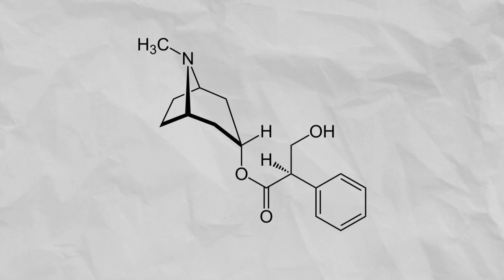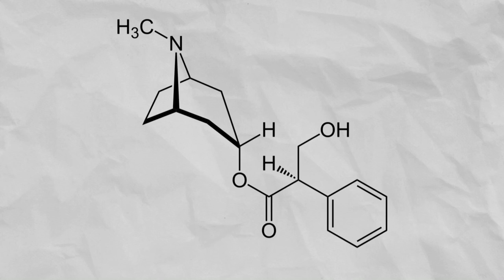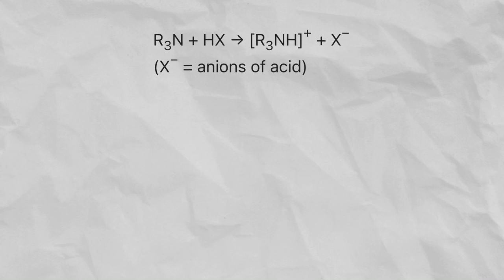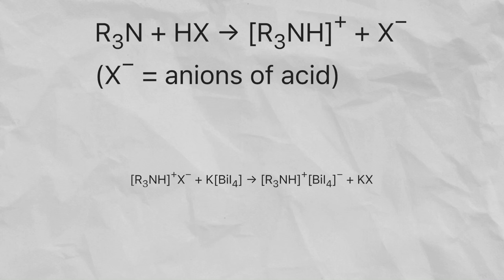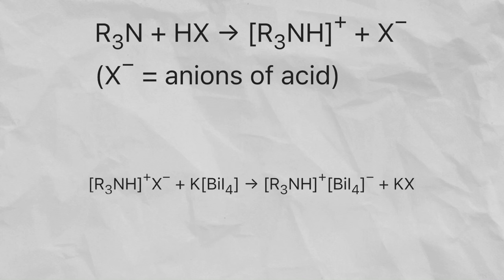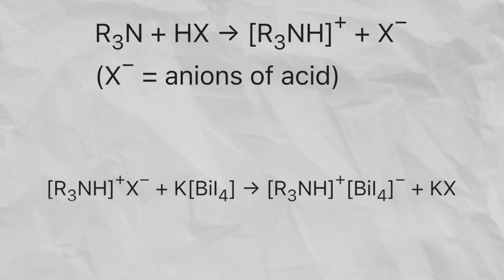Datura contains scopolamine as well as atropine which you can see here. Atropine has this tertiary amine right here and this is what the test actually detects. At first an ammonium salt between the tertiary amine and the acid is formed which then reacts with the potassium iodide to form an insoluble complex.